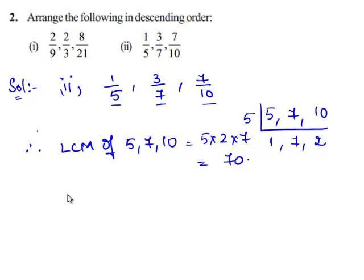Now we shall obtain the equivalent rational numbers with common denominator 70. The equivalent rational number for 1/5 is obtained by multiplying both numerator and denominator by 14. So we get 1 × 14 = 14 divided by 5 × 14 = 70, giving us 14/70.